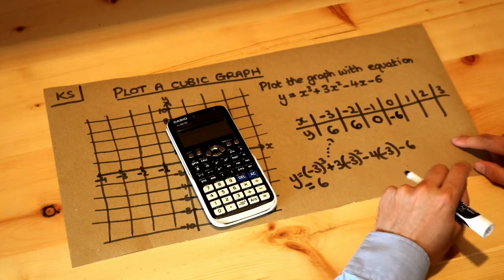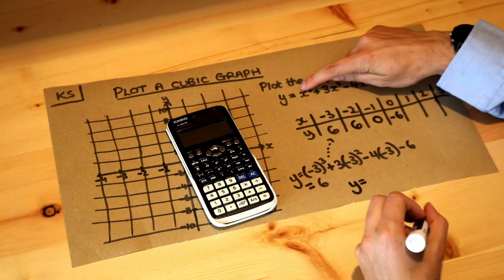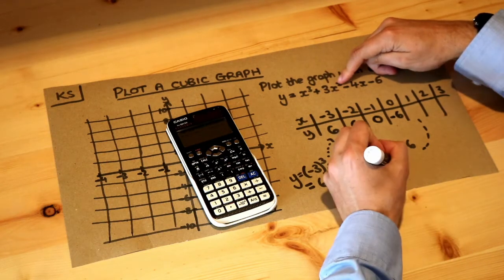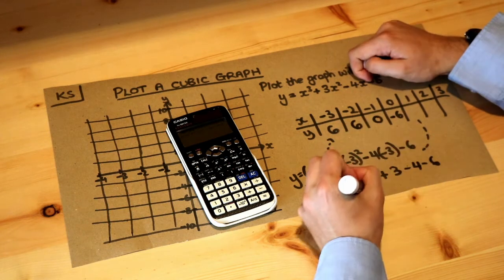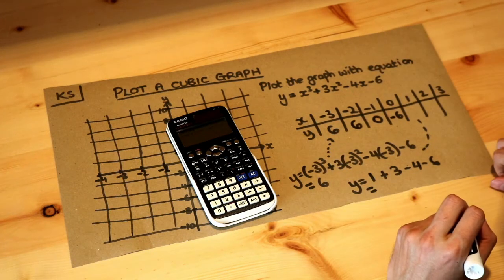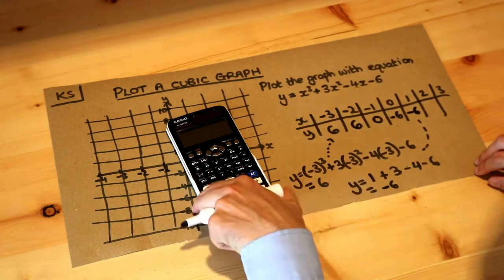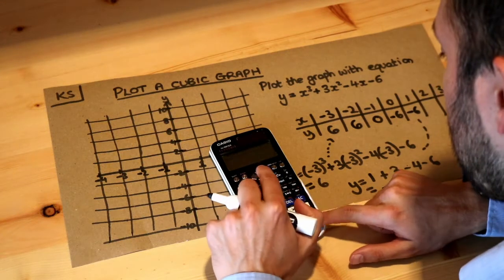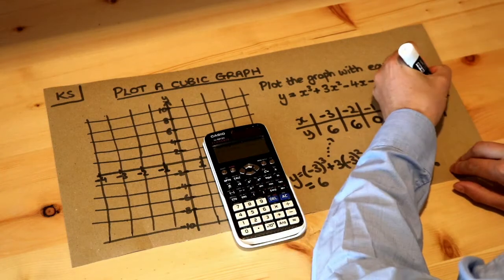And then if we sub in 1, I just do that manually. y is equal to 1 cubed which is just 1 plus 3 times 1 squared which is just 3 minus 4 times 1 which is minus 4 minus 6, and that gives us minus 6. And then when x is 2, if I do 2 equals and then sub that in I get 6 again. When I sub in 3 I get 36.